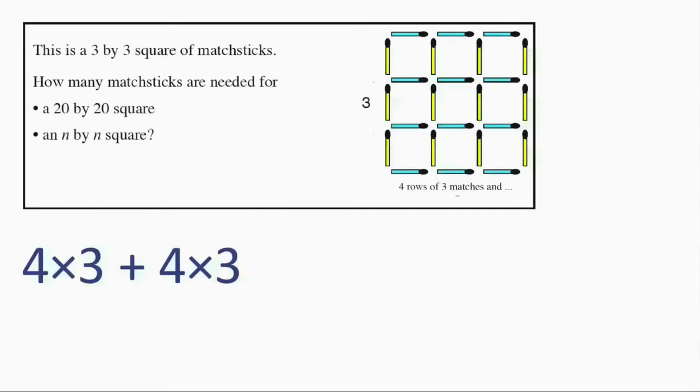Now, the number of matchsticks in each row and column is equal to the side length of the square, in this case 3, and the number of rows and columns is one more than the side length. So we can write our expression like this.